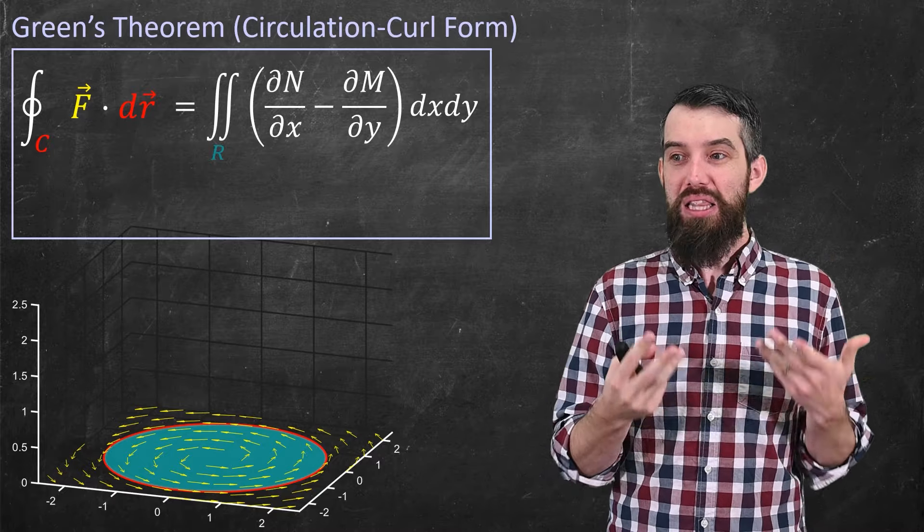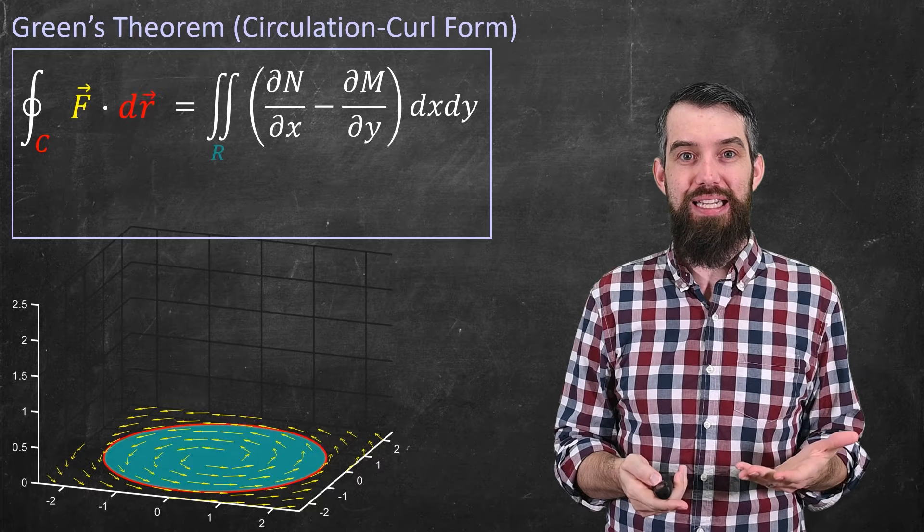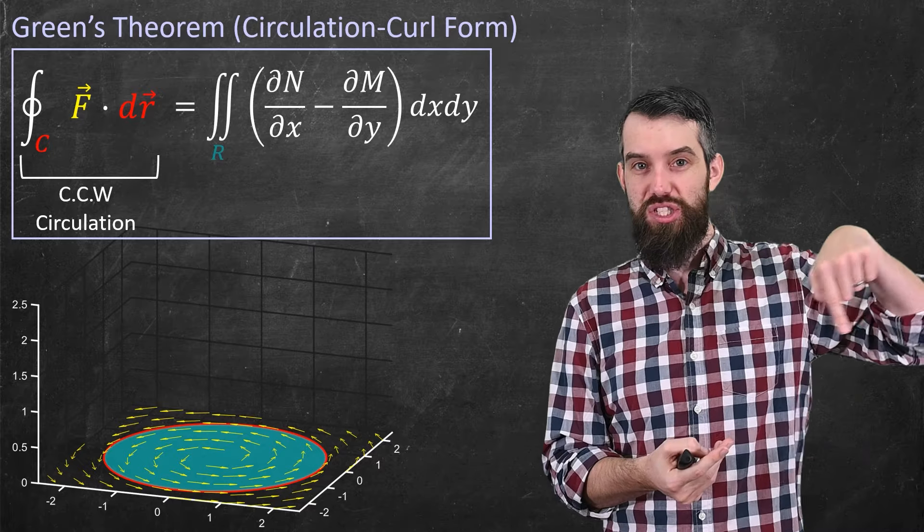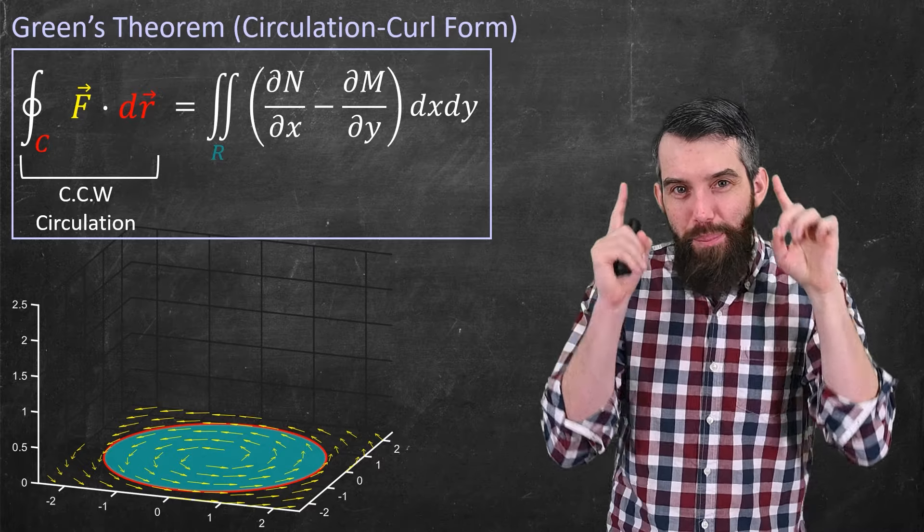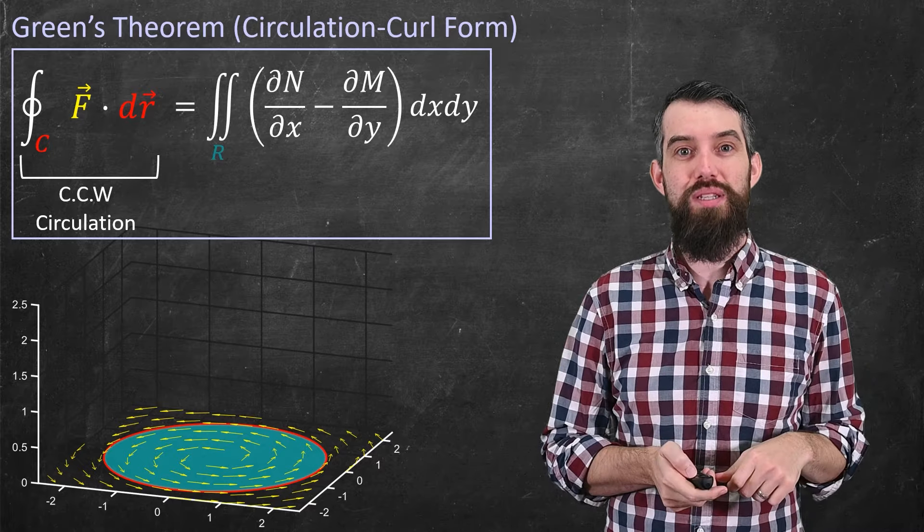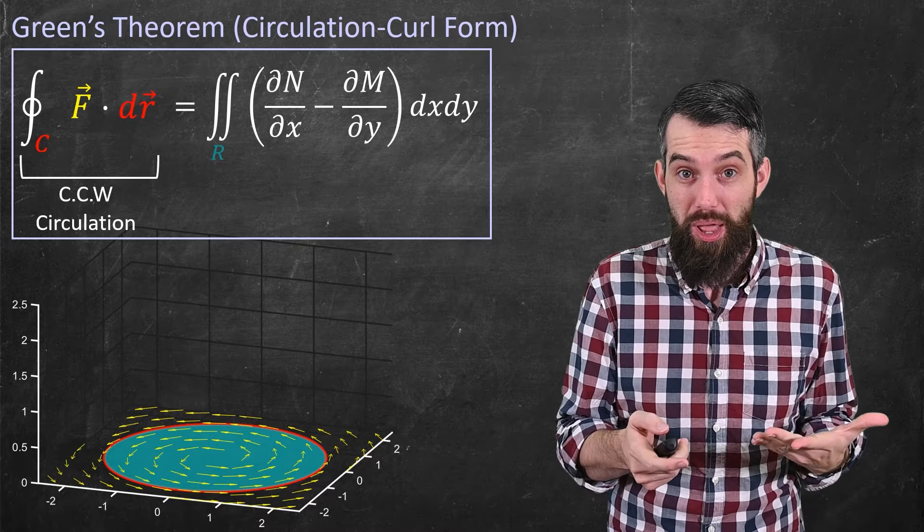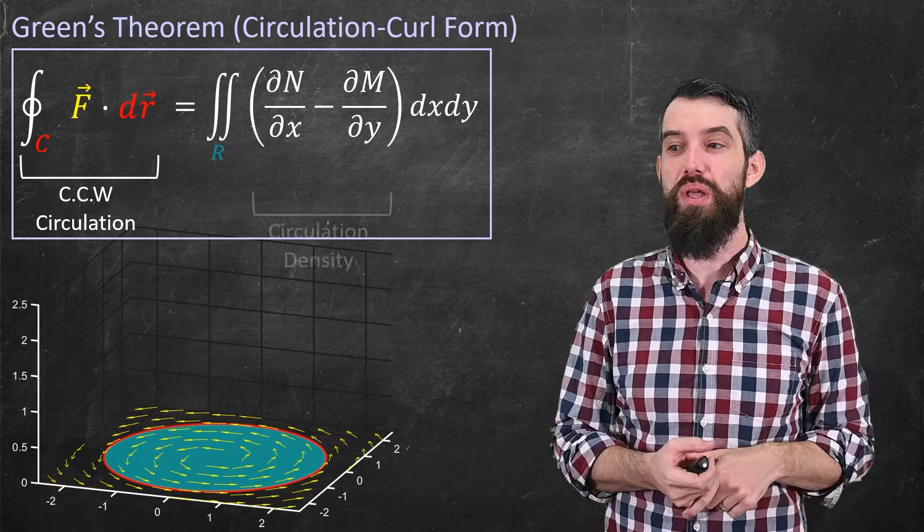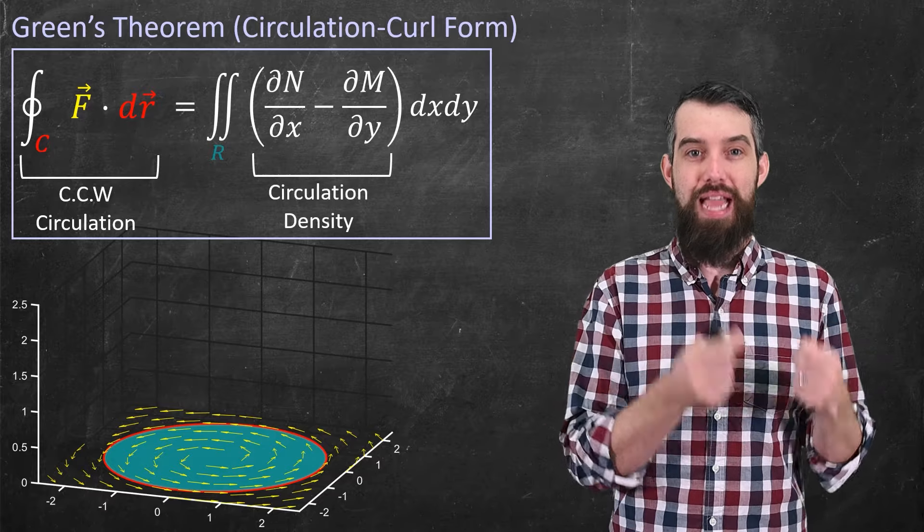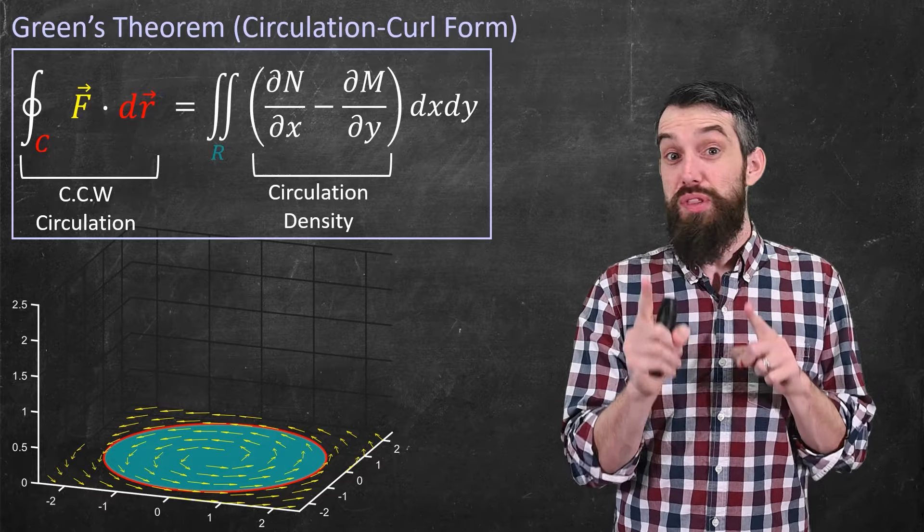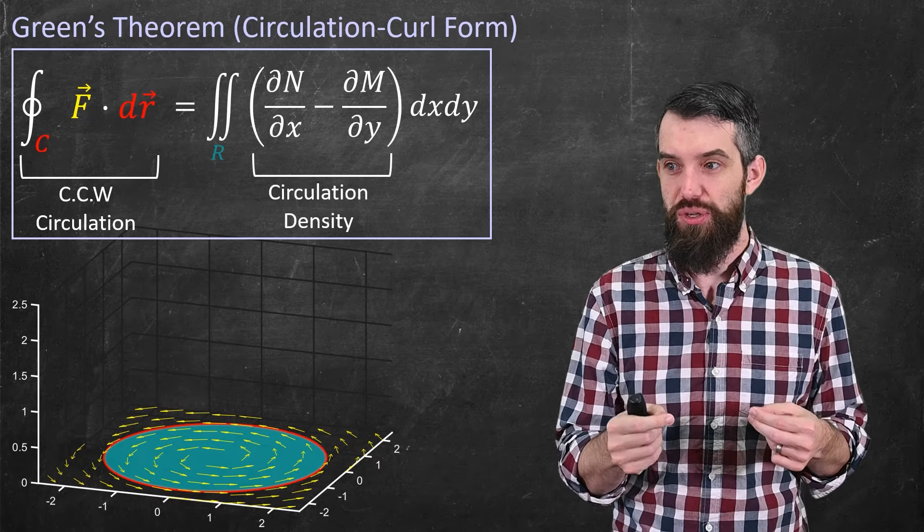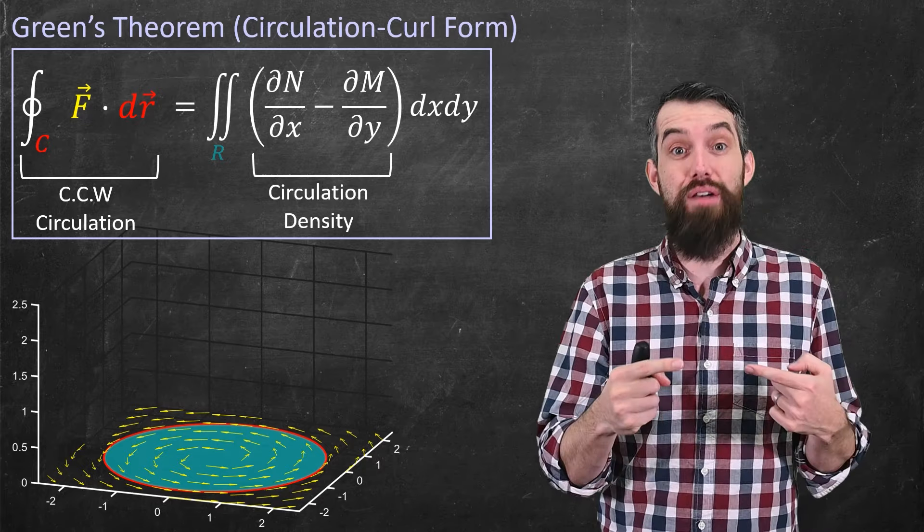And so when I look at this theorem, what it's really saying is on the left we have that counterclockwise circulation, the tendency to circulate around the boundary. And what was remarkable about Green's Theorem was that this was just equal to a double integral over the entire region, including all of that inside, of something that we call the circulation density.